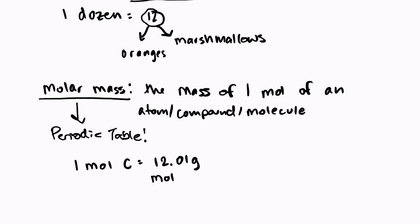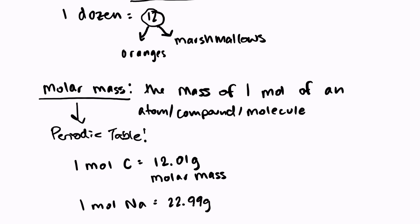So molar mass is really easy to work with — all you need is your periodic table. One mole of carbon is equal to 12.01 grams, and that is carbon's molar mass. One mole of sodium is 22.99 grams, found simply by looking at the atomic mass on the periodic table. Molar mass is equal to the mass of one mole of an atom, compound, or molecule, and we can find it easily just by looking at the periodic table.